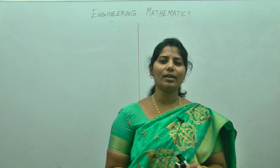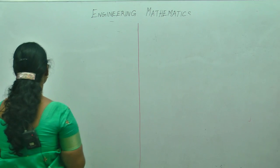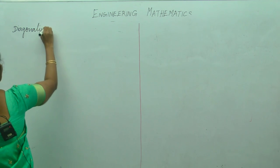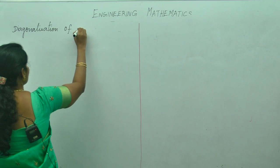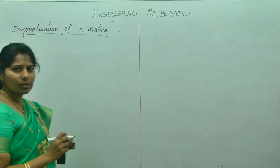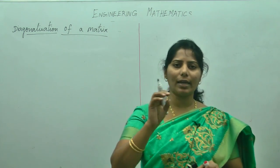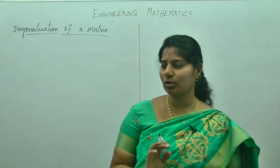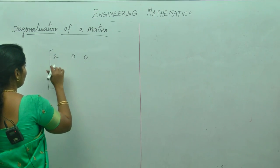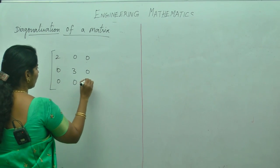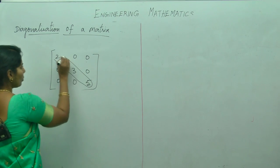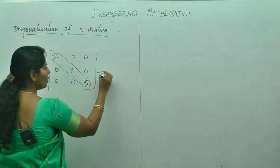The next topic is the diagonalization of a matrix. What do you mean by the diagonalization of a matrix? A matrix in which only the diagonal elements are present and all the other elements are 0s. For example, if you take the matrix with 2, 0, 0, 0, 3, 0, and 0, 0, 1 — only the diagonal elements are present and all other elements are 0. We call this a diagonal matrix.